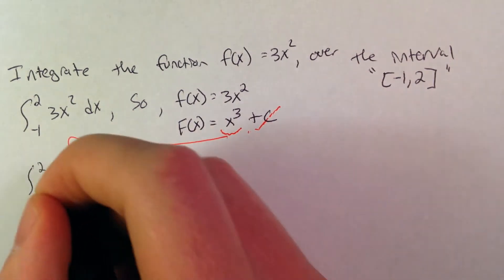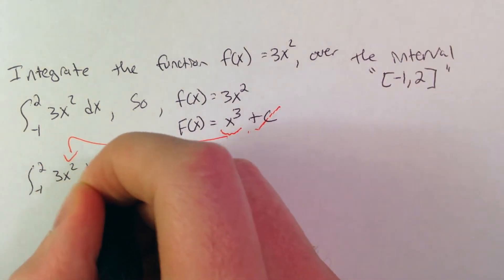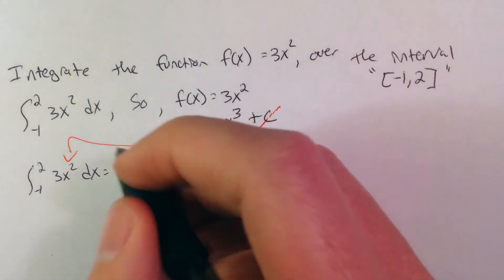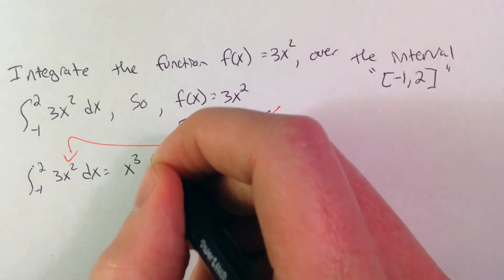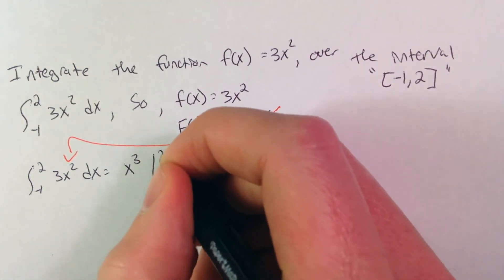We can then say from negative 1 to 2 of 3x squared dx, that is equal now to our antiderivative, x to the third, over the interval from negative 1 to 2.